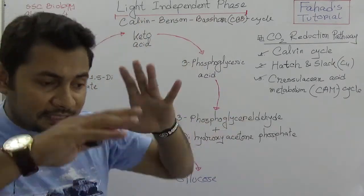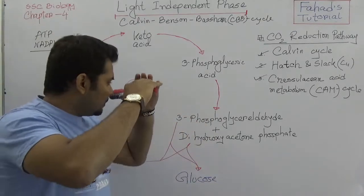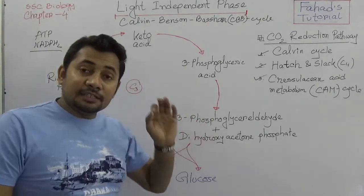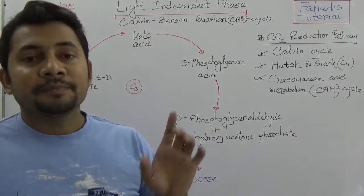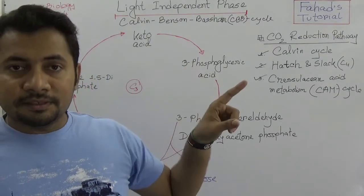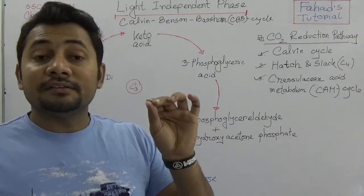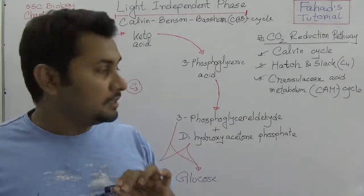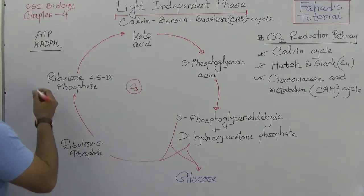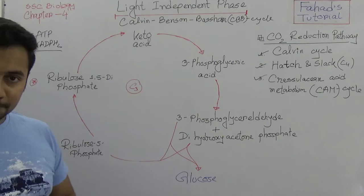Calvin, Benson, and Bassham discovered this pathway, and in 1961 Melvin Calvin received the Nobel Award for this discovery. This process starts from ribulose-1,5-diphosphate. The naming of these compounds may be difficult, but these are words you need to be familiar with.